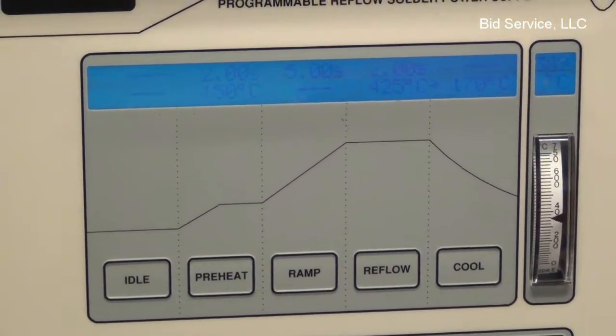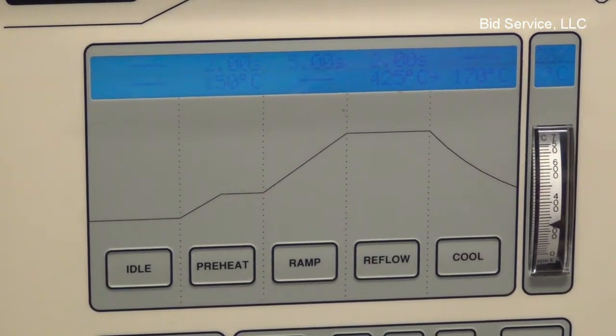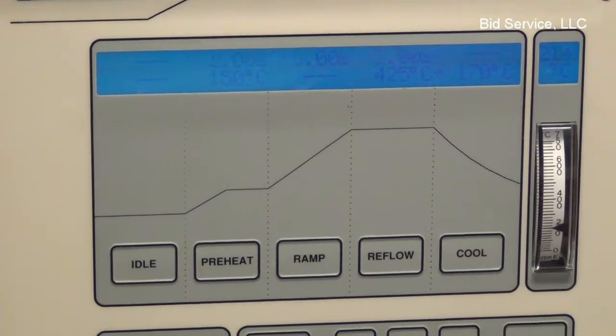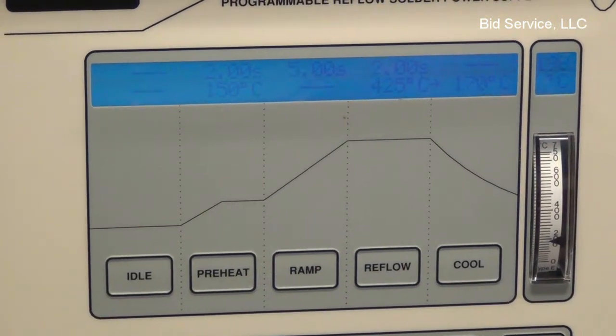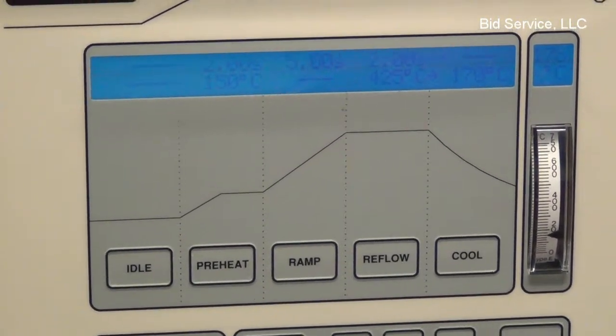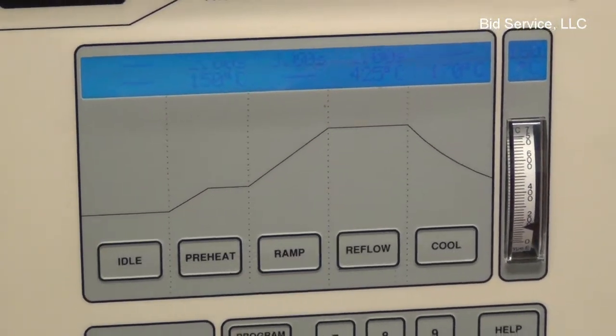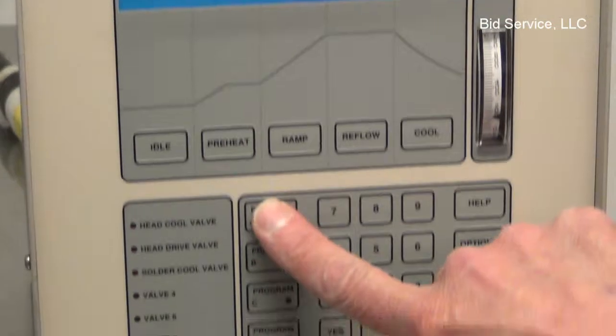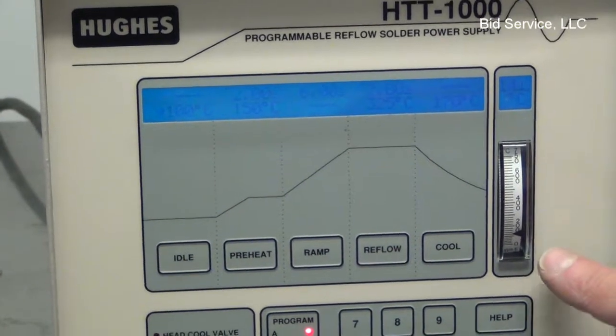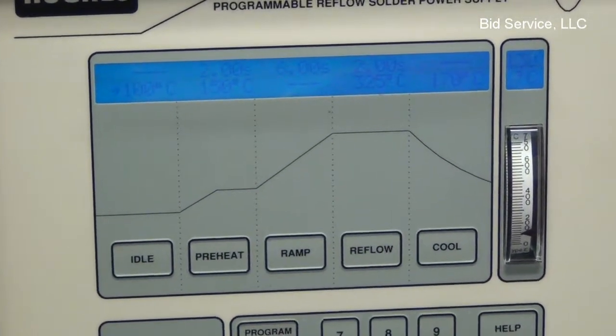And then cool down to 170. And that beep indicates the cycle is complete and I release the fire switch. Here we have it set at 100 as an idle temperature. So you'll see that the temperature gauge will adjust down to 100 and maintain 100 degrees when not in use.